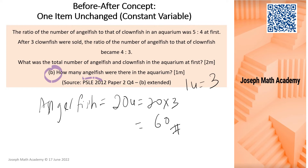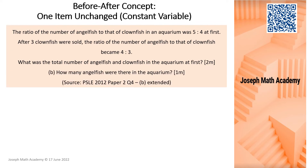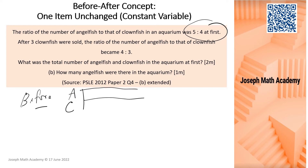Now I'm going to show you this same question using a model drawing. To do this, I'll first draw a model. Before: angelfish to clownfish is 5 to 4, so I draw 5 units for angelfish and 4 units for clownfish. Remember we have to start from the same starting line. The after model ratio is 4 to 3.